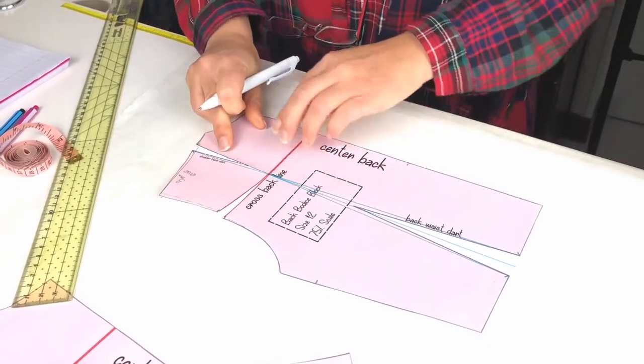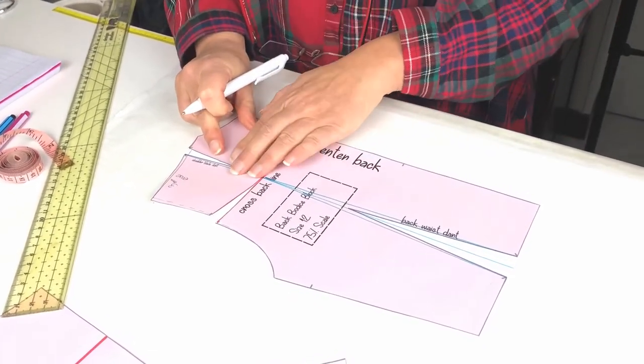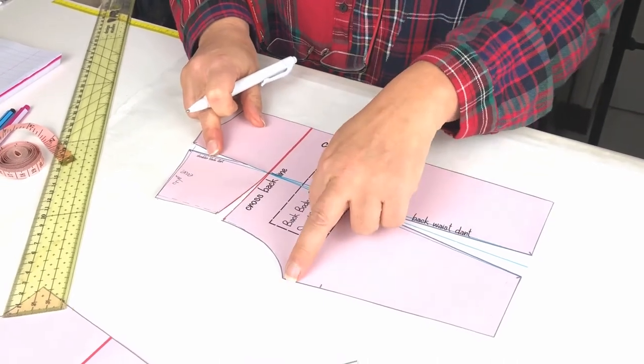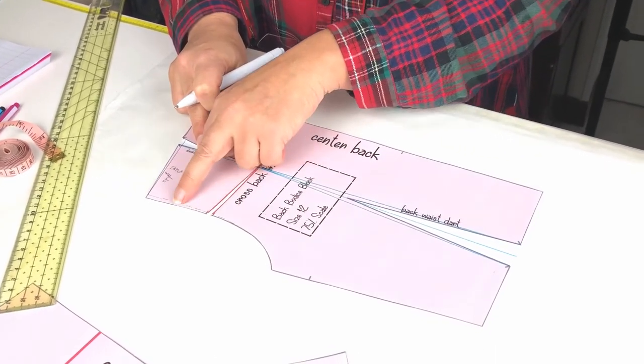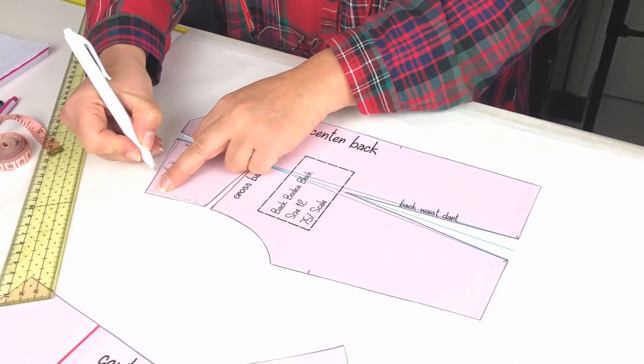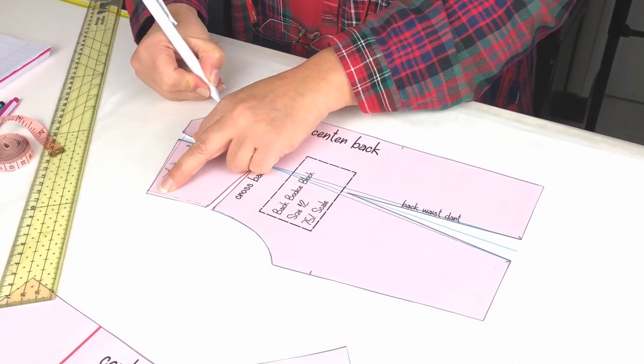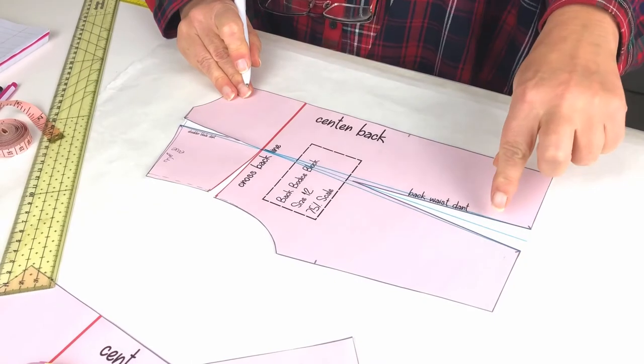So that's a combination of all three methods. So when you trace around the block now you'll just trace around here taking the new armhole shape straight across at the shoulder and around and continue to trace the rest of the block.